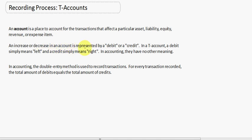An increase or decrease in an account is represented by a debit or a credit. In a T-Account, a debit simply means to the left, and a credit simply means right. In accounting, they have no other meaning.